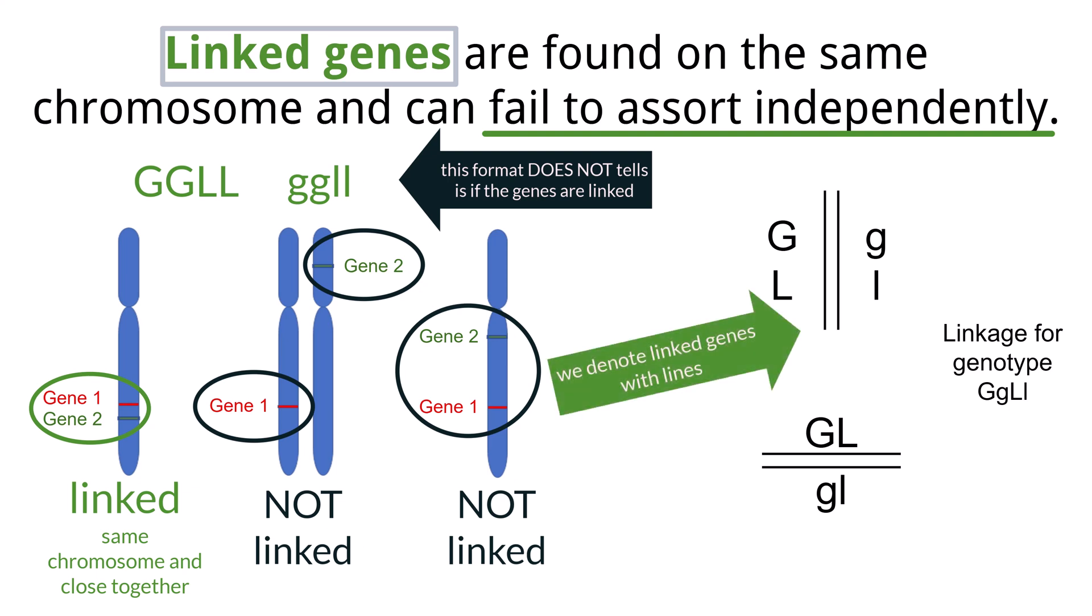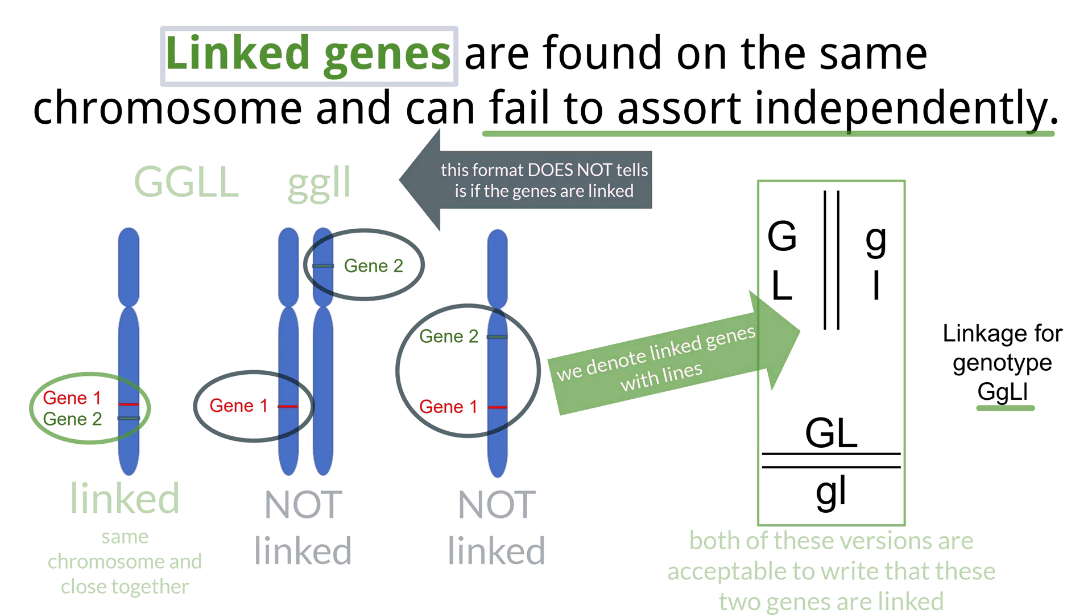Each line represents a homologous chromosome and shows the locus of the gene. The set of lines represents the genotype of uppercase G, lowercase g, uppercase L, lowercase l, or heterozygous for both traits.